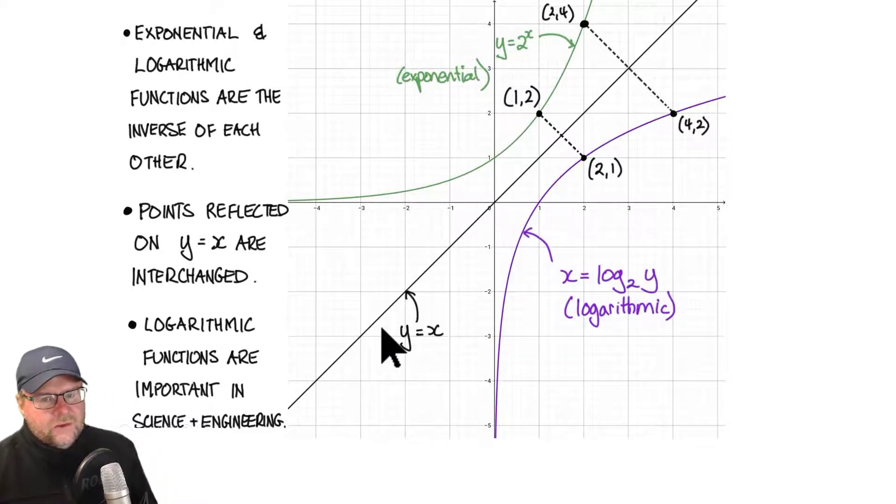Why are they important? Logarithmic functions are incredibly important in science and engineering. You might have heard for example the Richter scale that we measure the strength of earthquakes on is a logarithmic function. Decibels for sound, pH values for acidities. There's a whole heap of applications in science and engineering where logarithms are important.